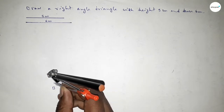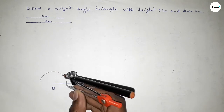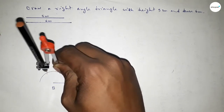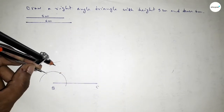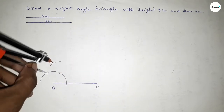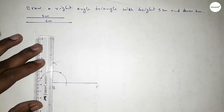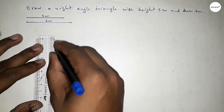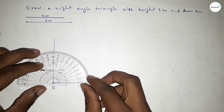Now we have to draw a 90-degree angle at point B. Putting the compass on point B and drawing an arc, then placing the compass at each arc intersection and cutting further arcs. Drawing another arc with the same length and cutting again so that both curves intersect at a point.